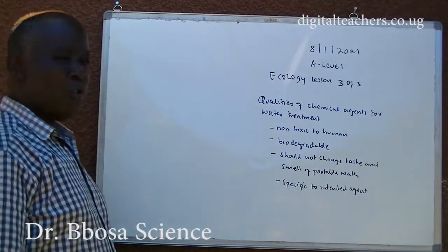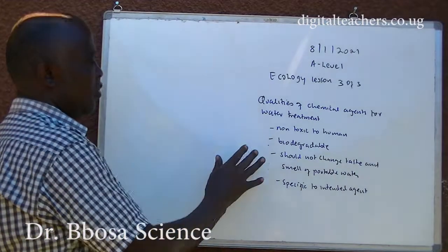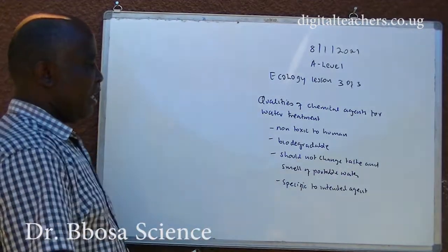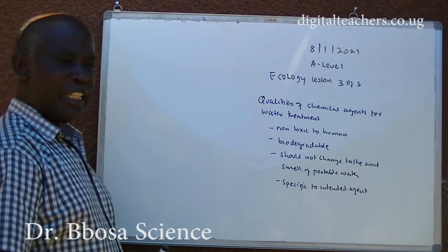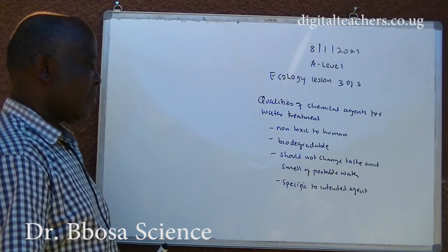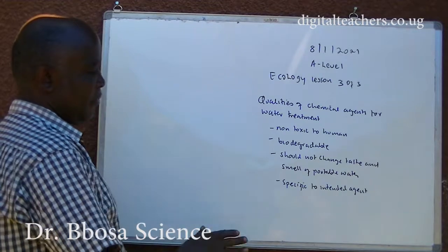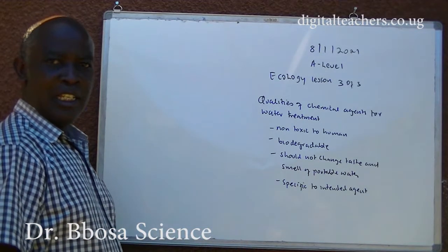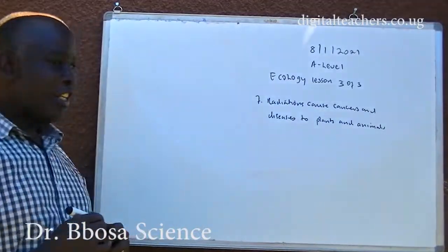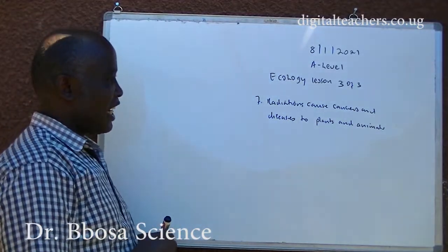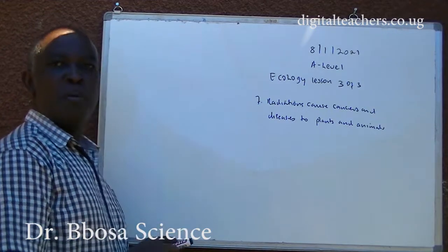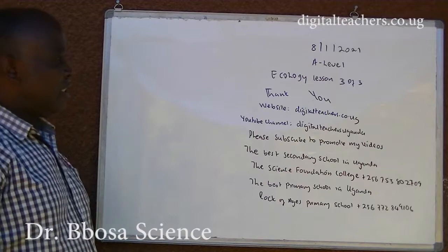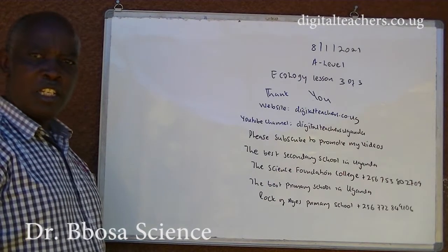Qualities of chemical agents for water treatment: should not be toxic to humans; should be biodegradable; should not change the taste and smell of potable water; should be specific to the intended agent. Seven: radiation causes cancers and diseases to plants and animals. Thank you so much for listening to this video.